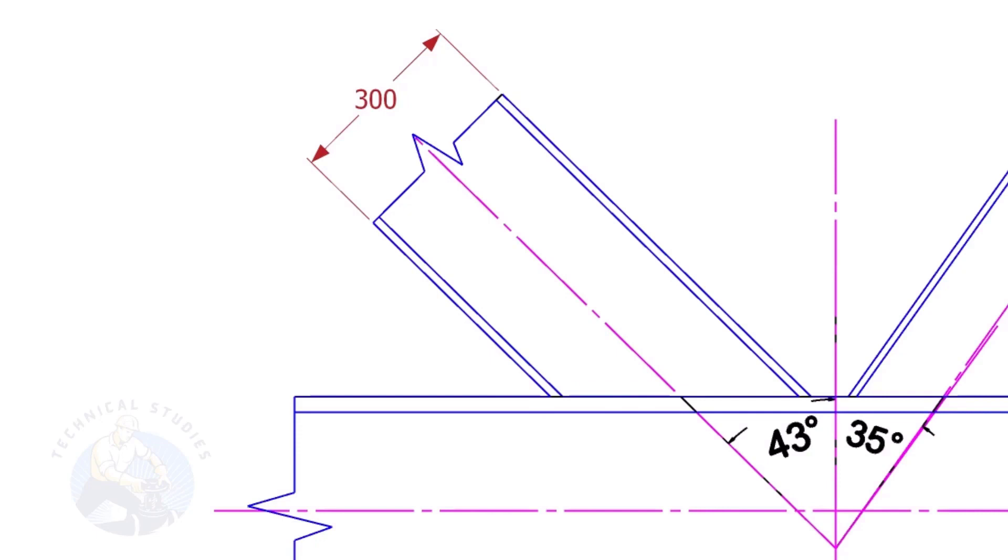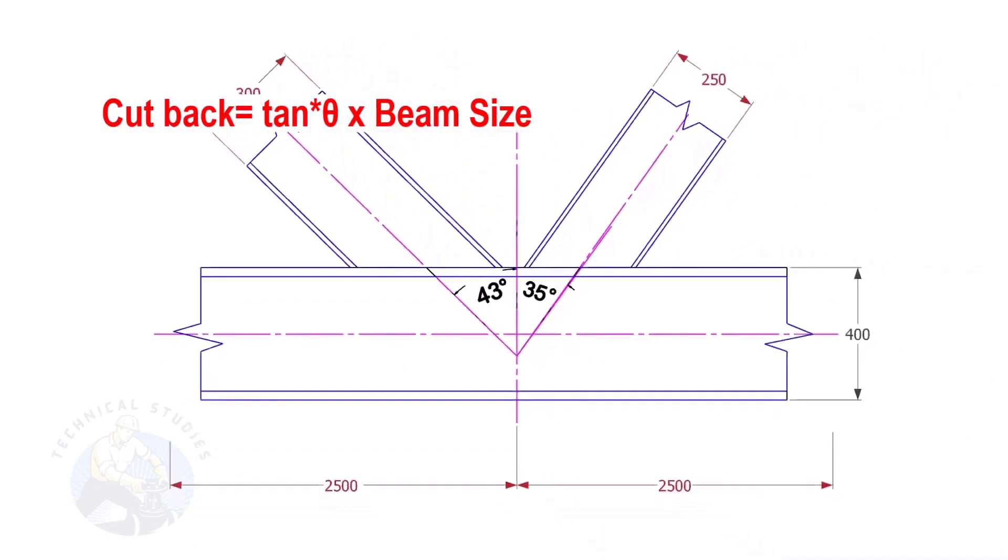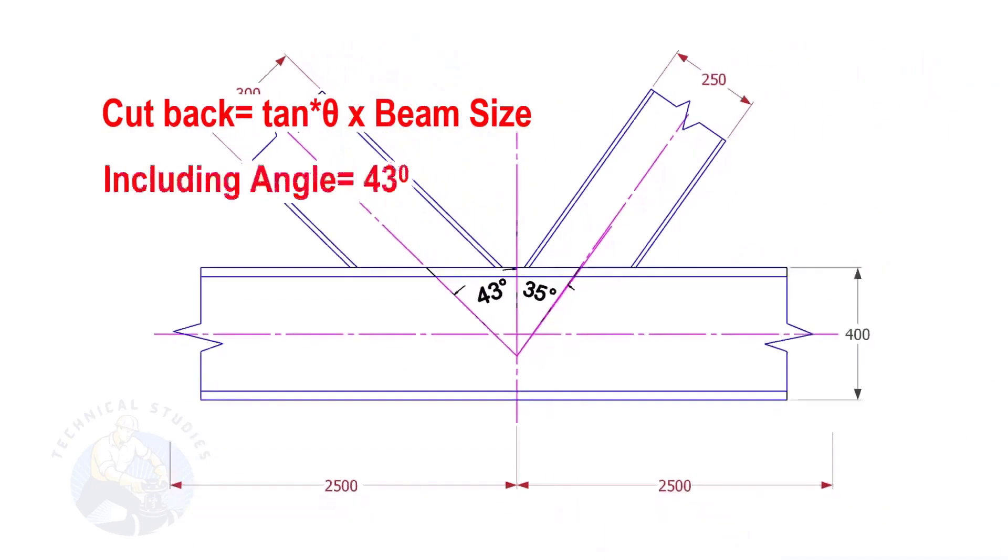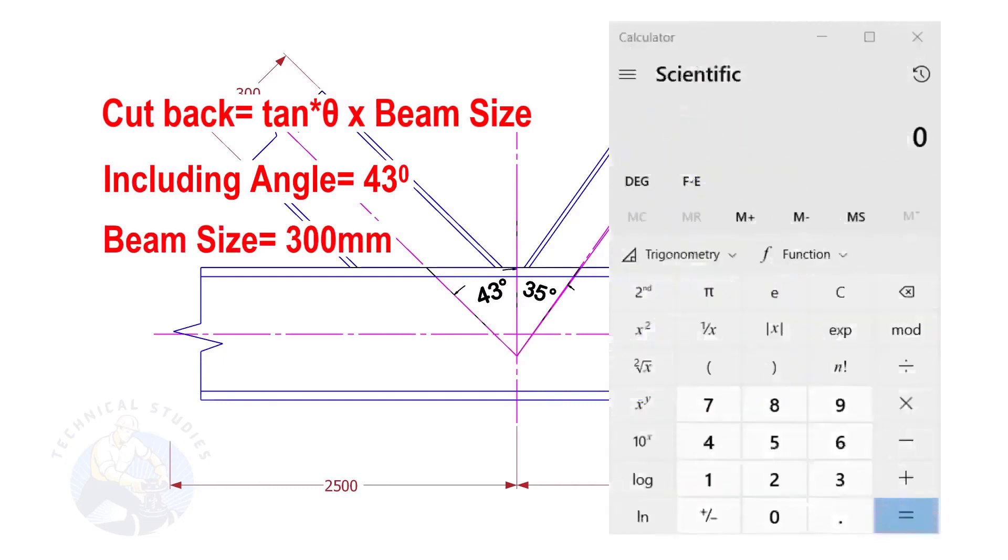The formula to calculate the cutback is tan theta multiplied by the size of the beam. If the including angle is 43 degrees and the size of the beam is 300, the cutback is tan 43 into 300.